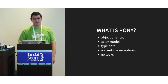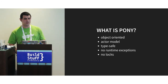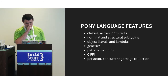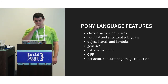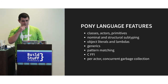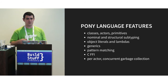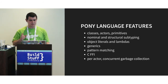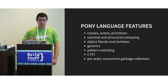Pony doesn't use locks, so there are no deadlocks and no data races. It has classes, actors, and primitives. Primitives are like classes but without fields — they just group methods, and there is only one instance per system. You can think of them as perfect singletons. It has both nominal and structural subtyping.